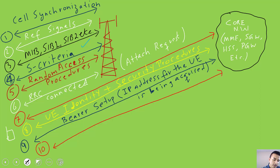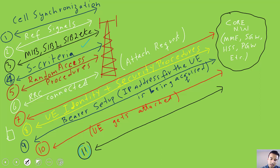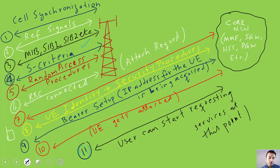Once the bearer setup and the control plane are established, the UE is attached and an Attach Complete message is exchanged. At this point the UE gets completely attached. As a user, you should see your phone showing LTE/4G signal and it should be ready for you to start requesting services such as Google, Facebook, Gmail, or any other service you want to access.